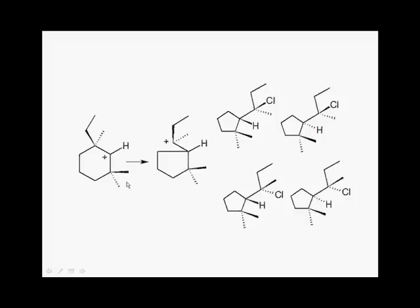Finally, we have the most complicated 1,2 shift. It involves another ring contraction. This time, we're counting 1,2, so we're going to be migrating this carbon.